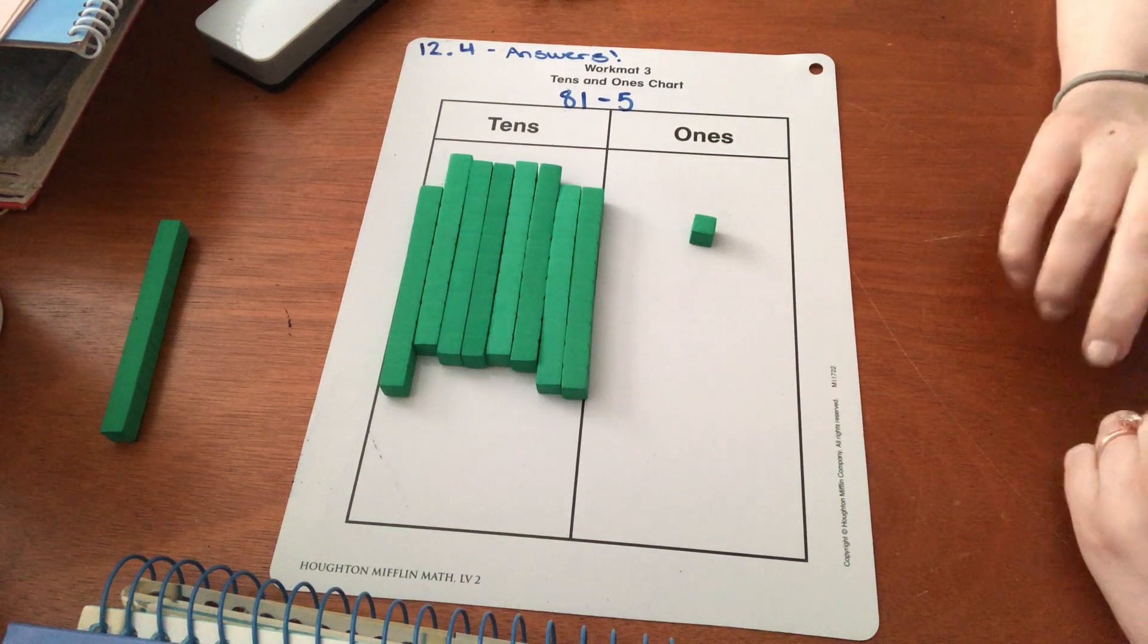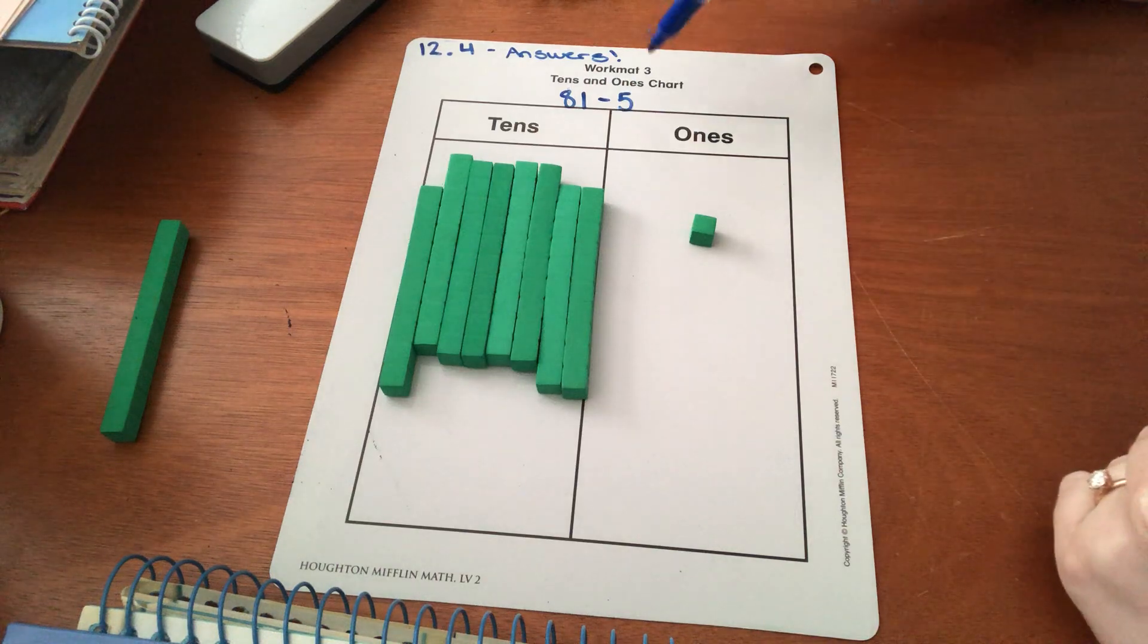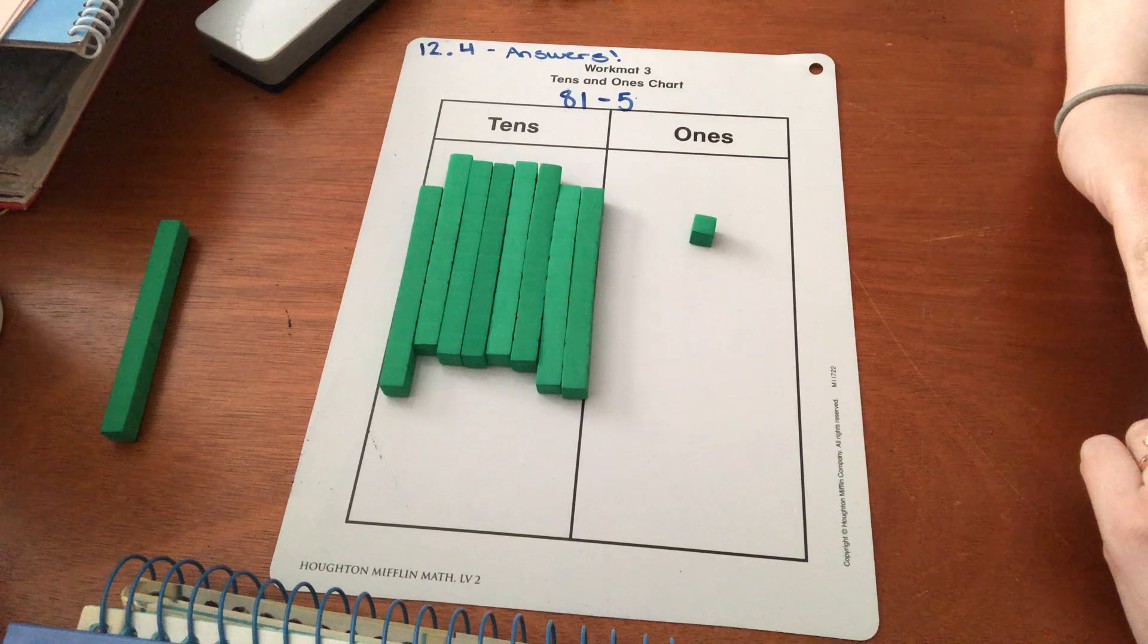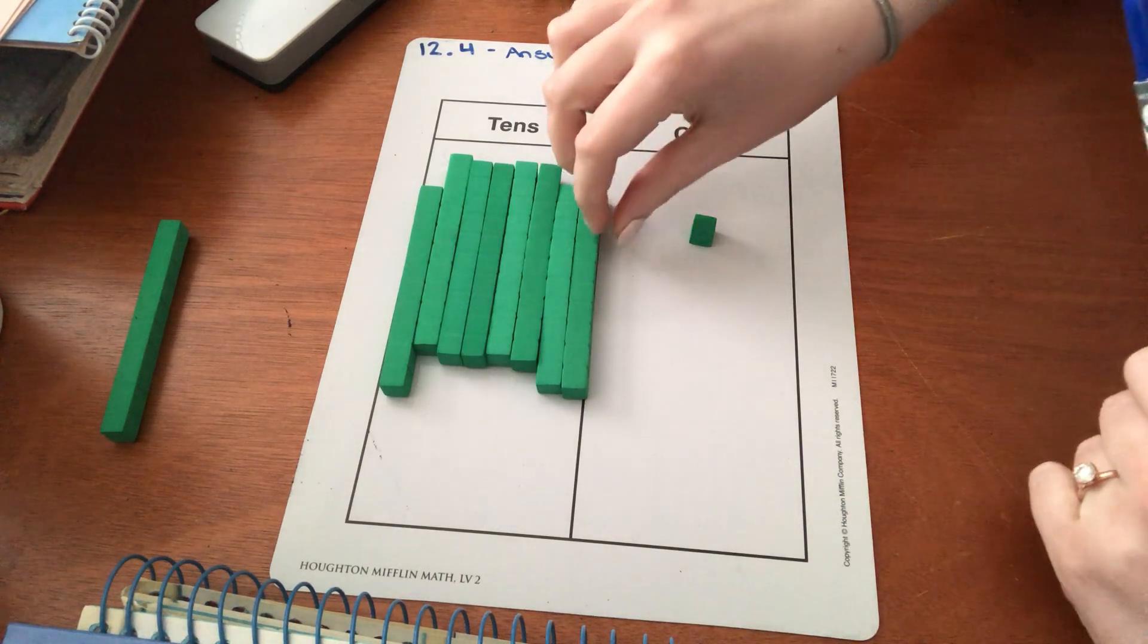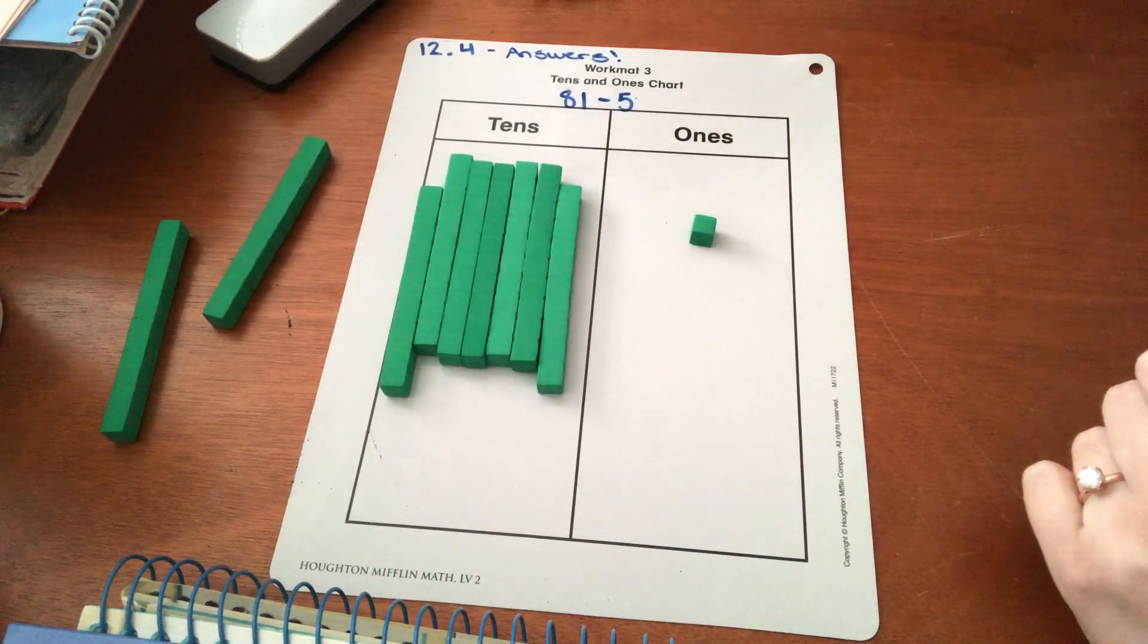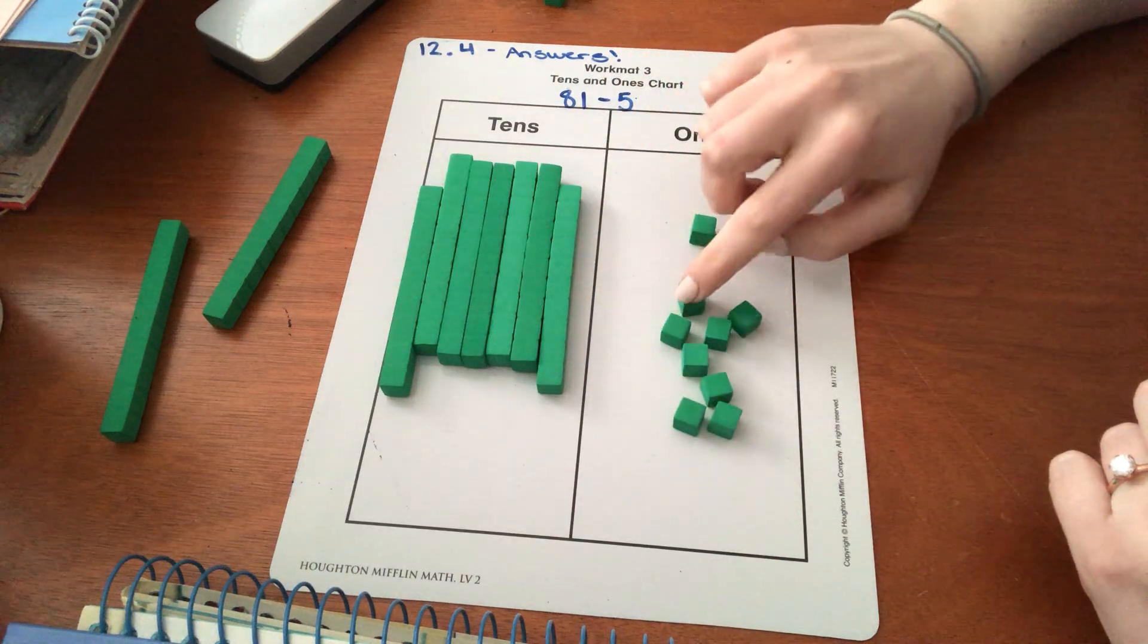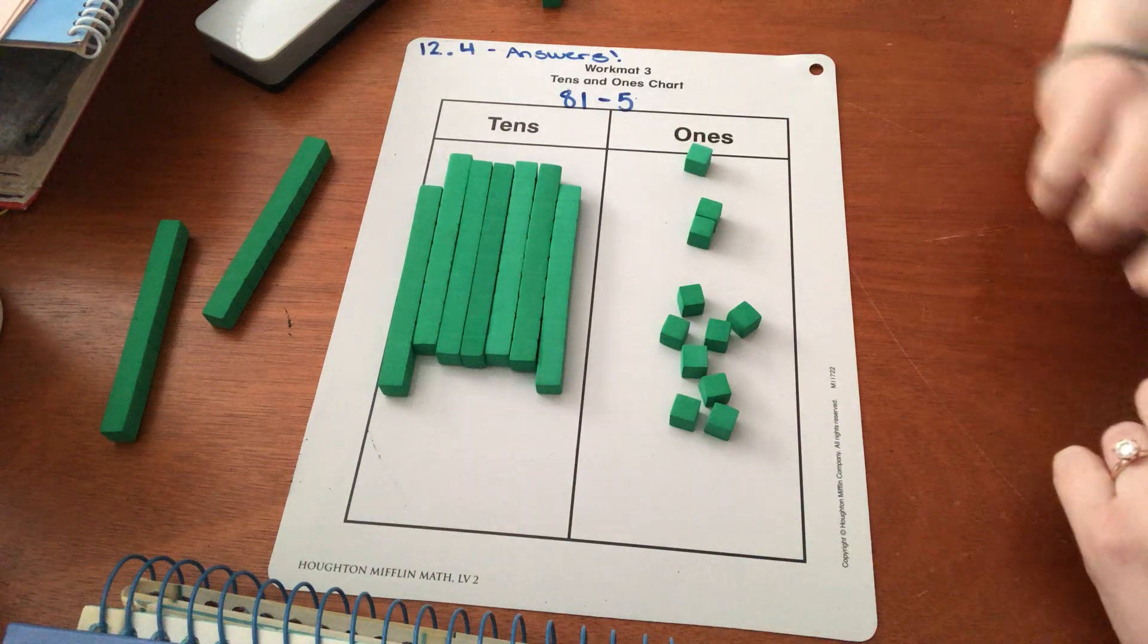Column number two. Do I need to regroup? Do I have to regroup here? Can I take five away from this number? Oh, I need to regroup. So I'm going to go ahead and move this ten stick over here. But I can't have a stick over here. I need to replace it with ten ones. Let's see. One, two, three, four, five, six, seven, eight, nine, ten. Cool.